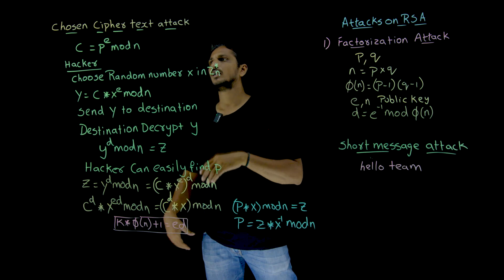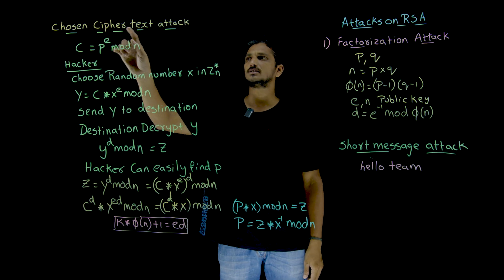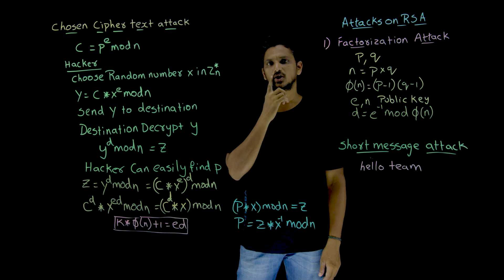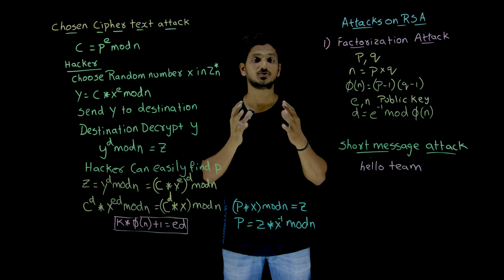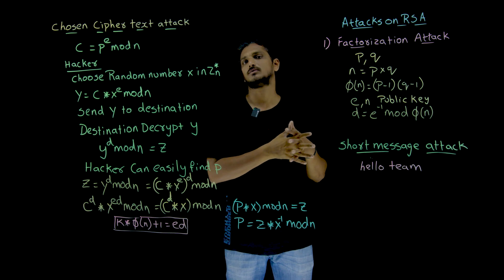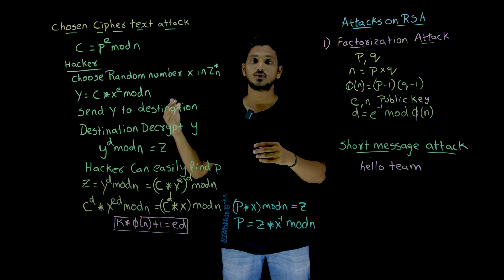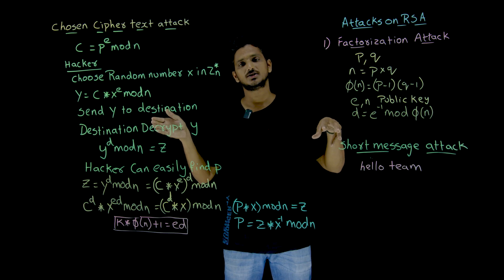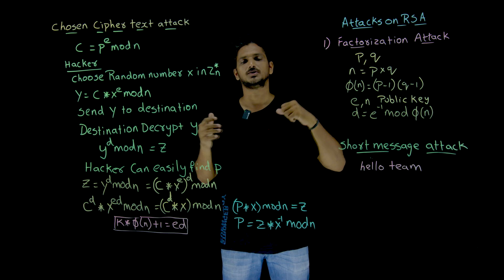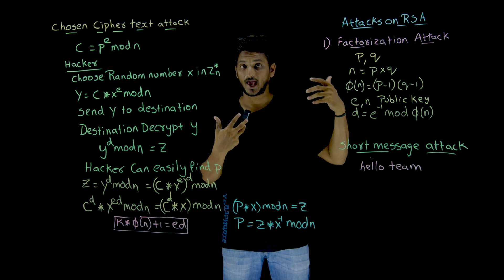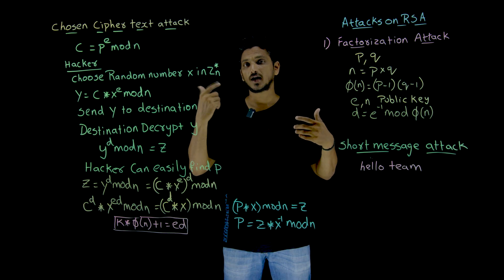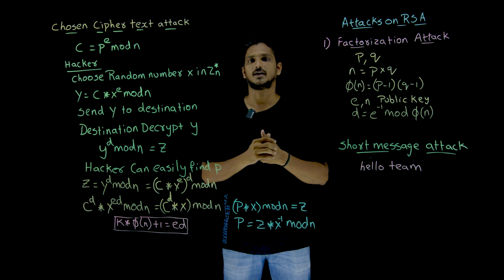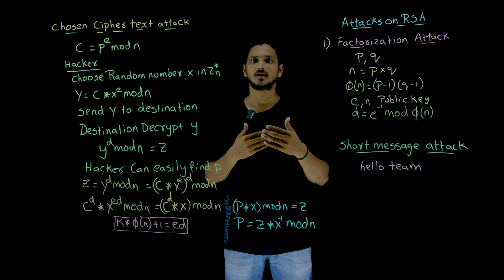Coming to the second attack, we have the chosen ciphertext attack. Chosen ciphertext attack means if the hacker has access to the destination system — the source system encrypts the data and the destination system does the decryption — if he has access to the destination, there is a possibility to attack RSA and recover the plain text.